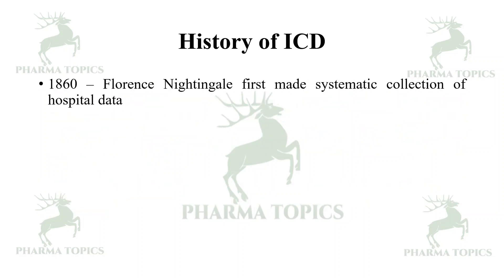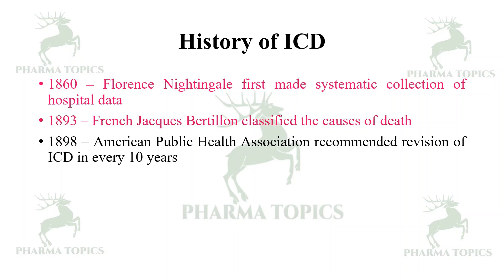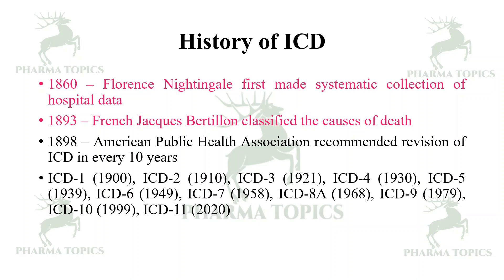Let us see the history of ICD. In 1860, Florence Nightingale first made a systematic collection of hospital data. In 1893, French physician Jacques Bertillon classified the causes of death. In 1898, the American Public Health Association recommended the revision of ICD every 10 years. So ICD-1 was published in the 19th century, ICD-2 in 1910, ICD-3 in 1921, ICD-4 in 1930, ICD-5 in 1939, ICD-6 in 1949, ICD-7 in 1958, ICD-8 in 1968, and ICD-9 in 1979.